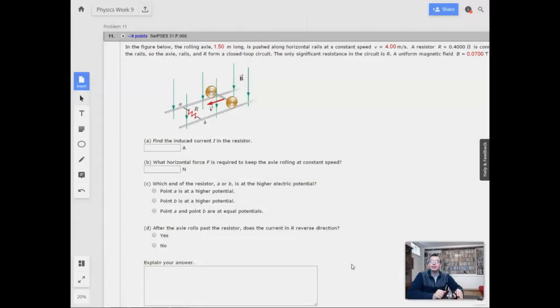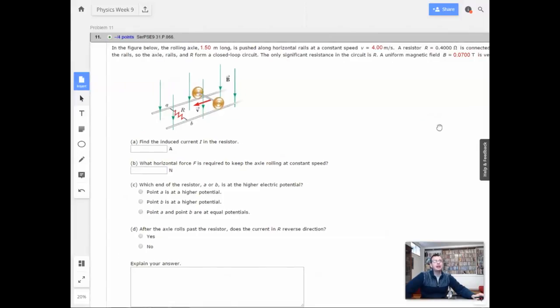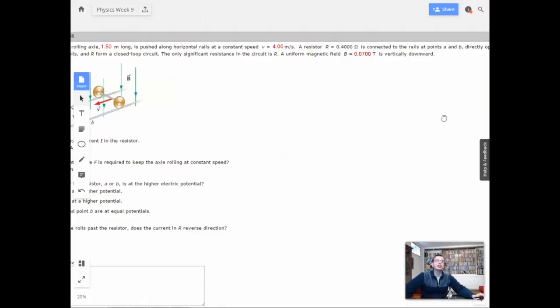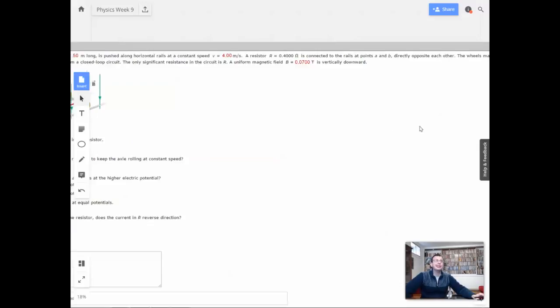Week 9, problem 11. In the figure below, the rolling axle, 1.5 meters long, is pushed along horizontal rails at a constant speed of 4 meters per second. A resistor of 0.4 ohms is connected to the rails at points A and B, directly opposite each other.